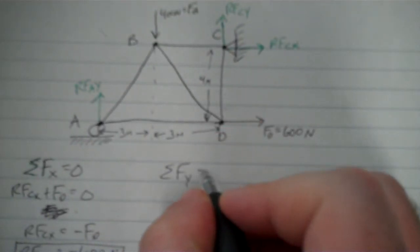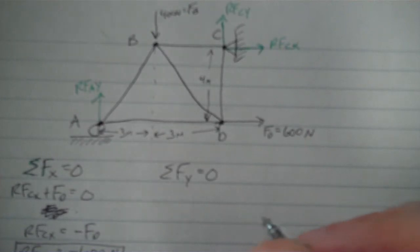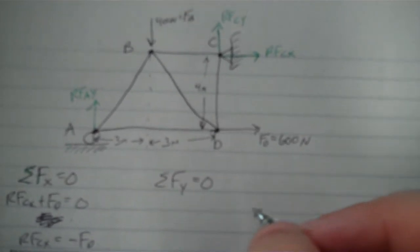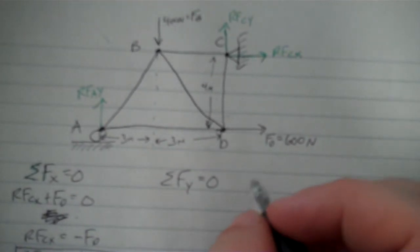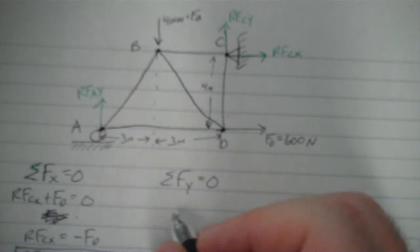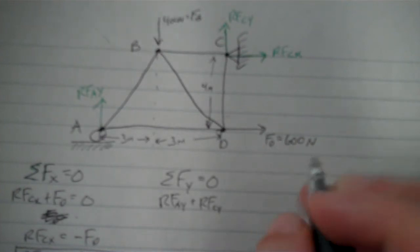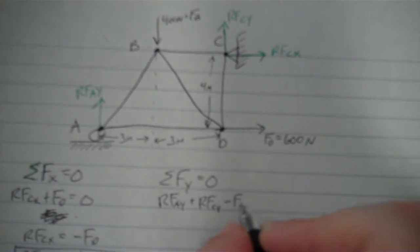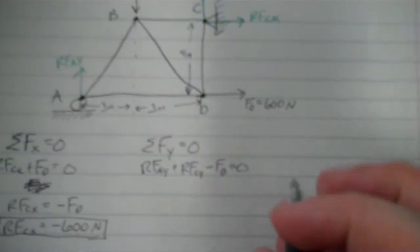Next I'll set up the sum of the forces in the Y. Now there's no... You don't have to do this in this order. This is just the order that I usually do it in. I'm just kind of used to doing it that way. There's no reason you have to do it this way. Okay, so our reaction force AY plus reaction force CY minus FB, and I say minus, it's going in the opposite direction. All that has to equal zero.